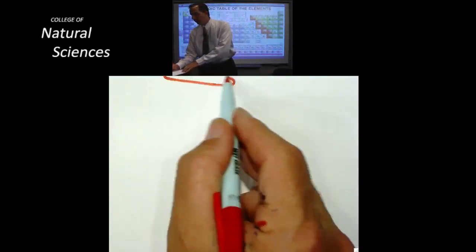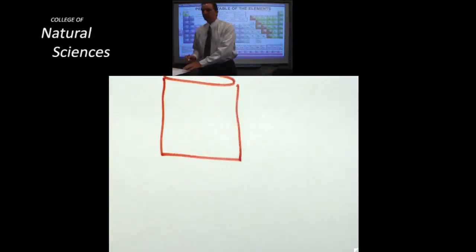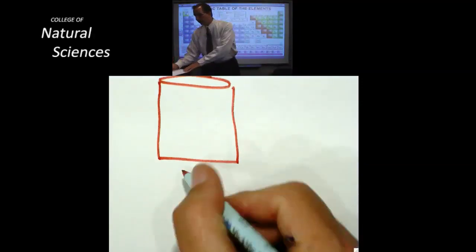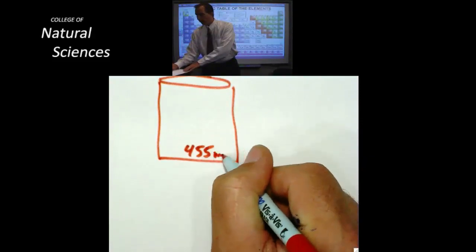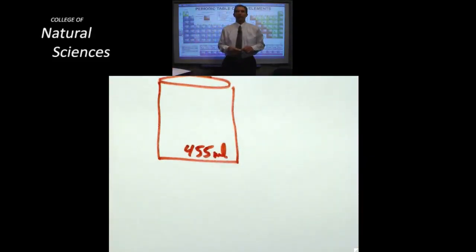So what I'm going to show you right here is known as a can of soda. There's my can of soda, and that can of soda is 455 milliliters. You can see it down in the lower right hand corner.